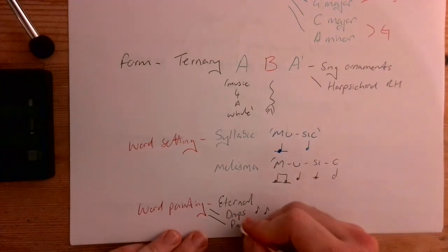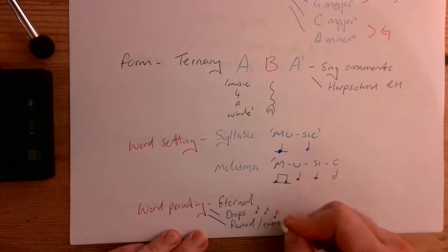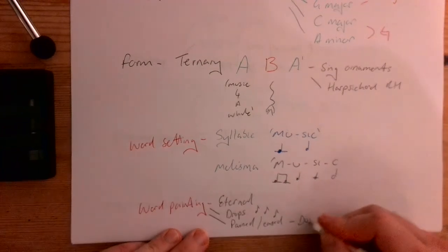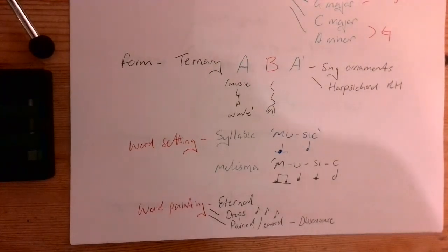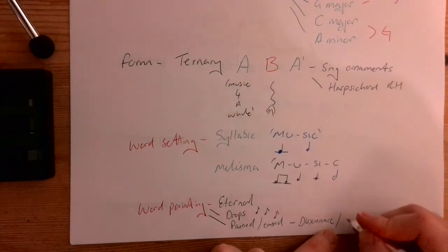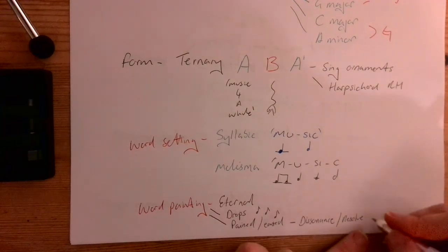We have it on the words pained and eased, where pained is a dissonance. So a note that doesn't match the chord or a chord that doesn't match the key. And then it is resolved on the word ease, so where it does match it or it is consonant.